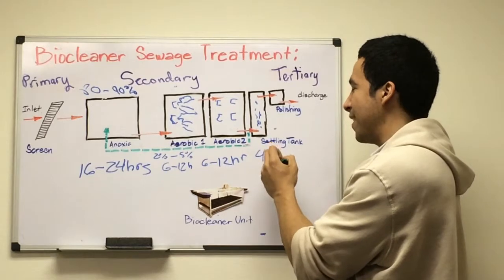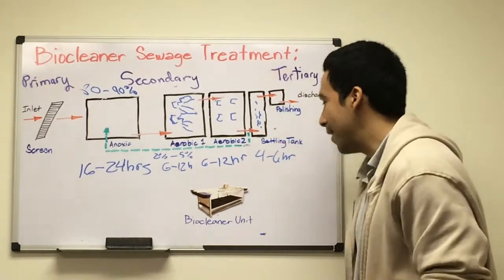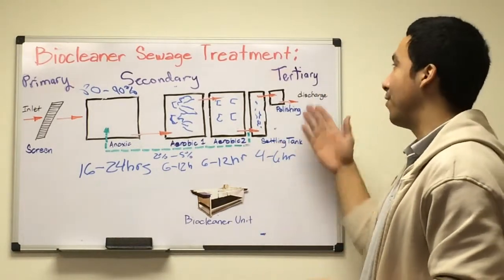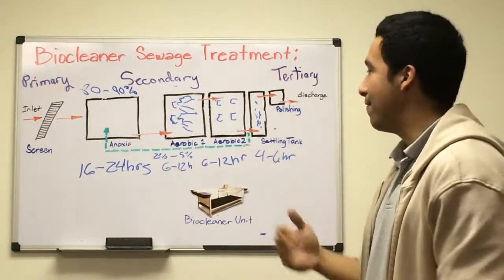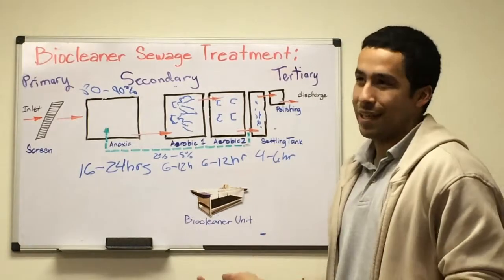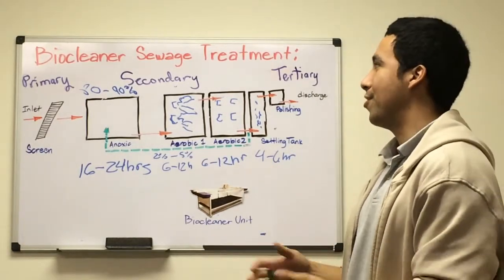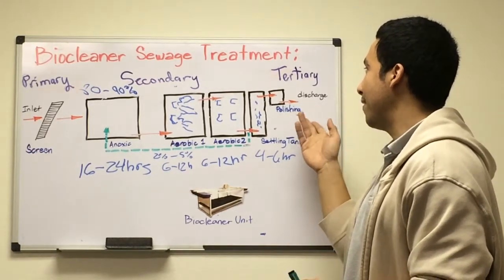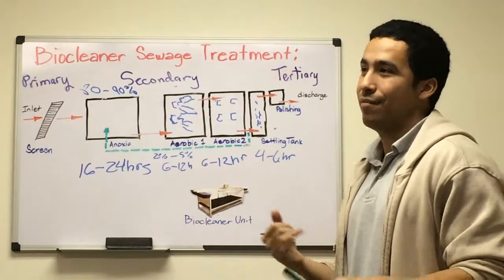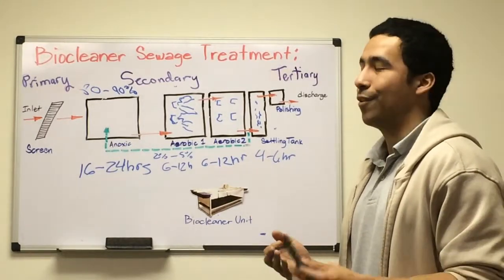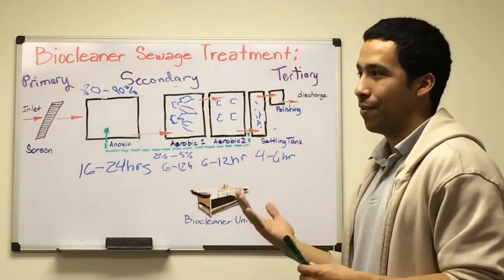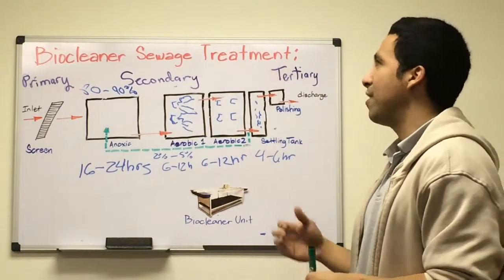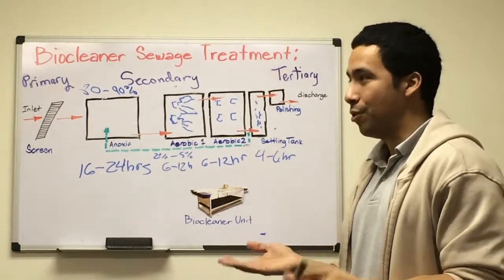After settling, we have tertiary treatment, which is disinfection. We need disinfection to immobilize the pathogens such as E. coli. There's different processes to treat, anywhere from chlorination, ultraviolet, or ozone or any other type of process. Usually chlorination is the most commonly used type of treatment.